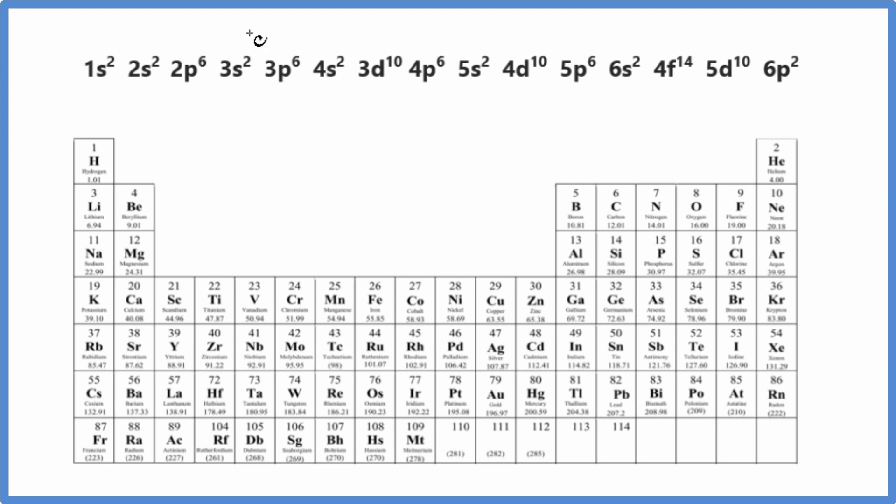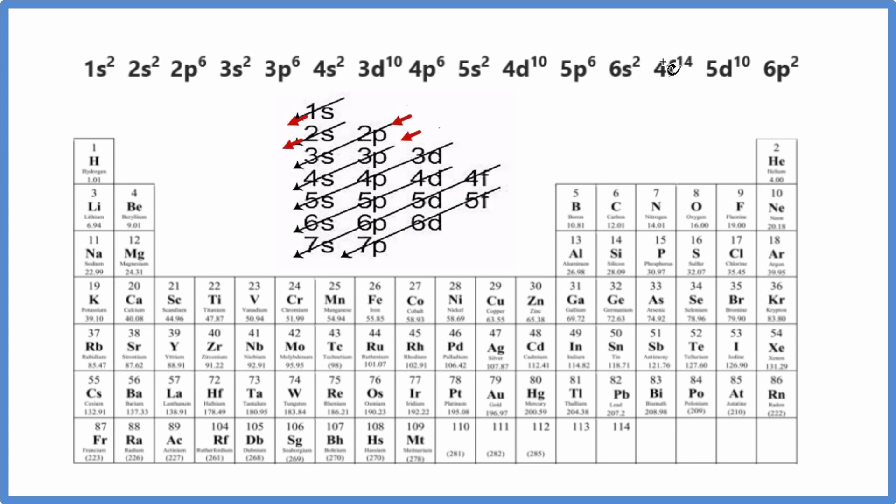For lead, this is what we end up with our electron configuration being. We can use this chart here to figure that out. And there's a link in the description on how you can use the chart to figure out this electron configuration for lead.